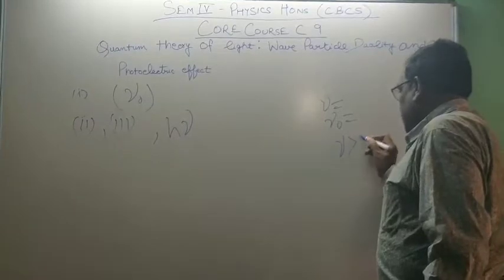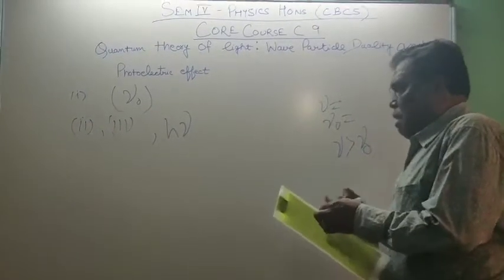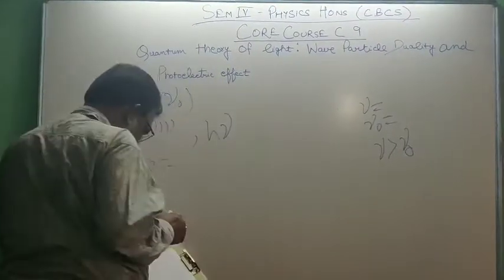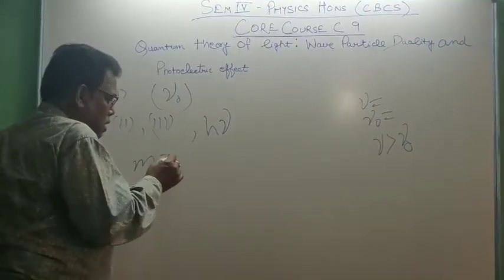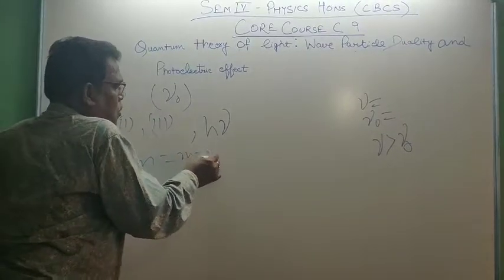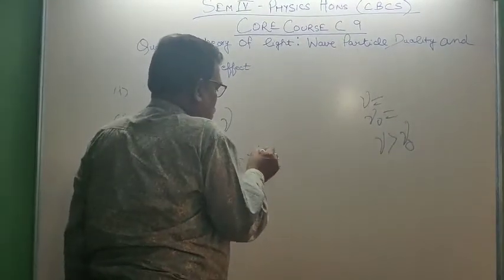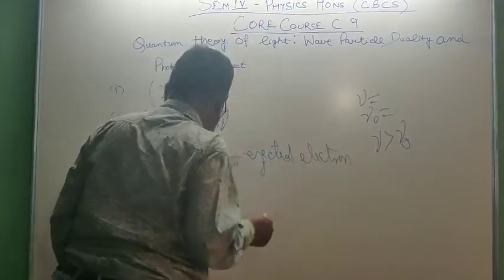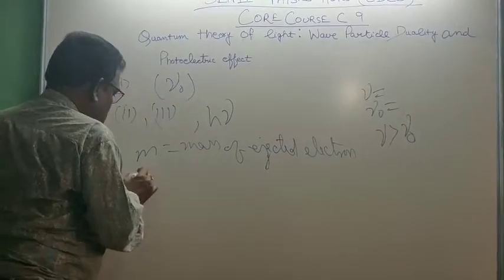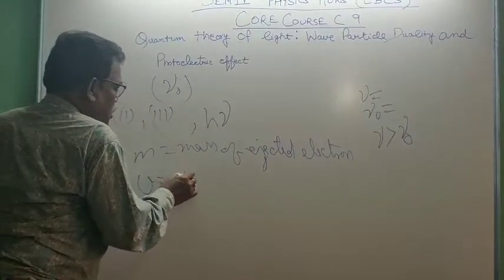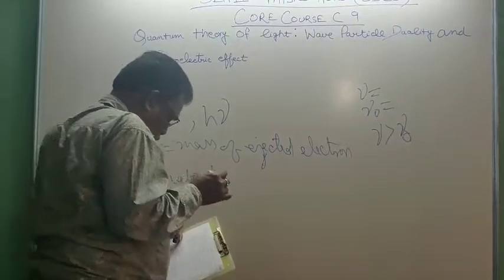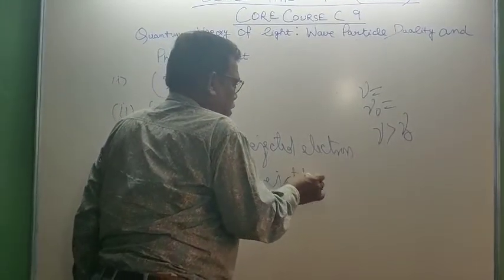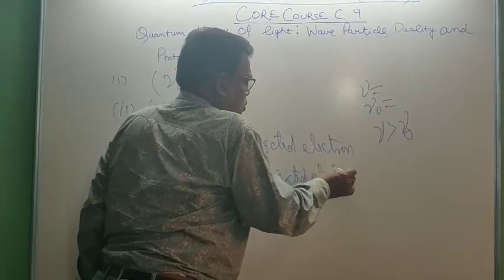nu must be greater than nu naught. Let m equal to mass of ejected electron. Now, let v is velocity of ejected electrons.